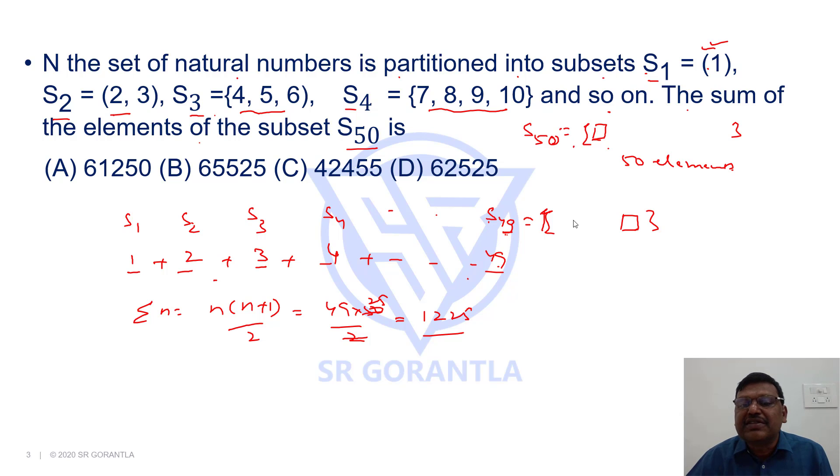They will have 1225 elements. If they are 1225 elements starting from 1 means, the last element of this 49th subset will be 1225.